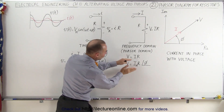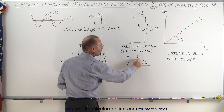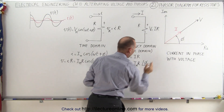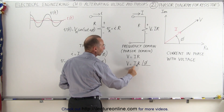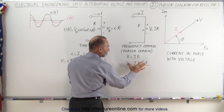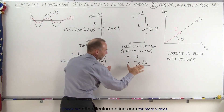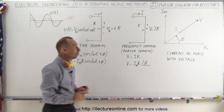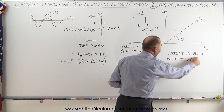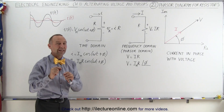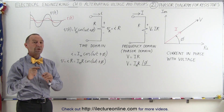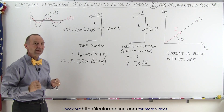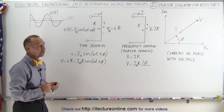Translating that into the frequency domain, it's simply the current times the resistance. If there's a phase angle other than zero — as you can see at time equals zero there's already a phase angle — then it's the maximum current times the resistance, giving you the maximum voltage times the phase angle. This equation is exactly represented in the phasor domain by that expression. The current is in phase with the voltage for a resistor; the current and voltage reach a maximum, minimum, and zero at the exact same moment in time. That's how we deal with phasor diagrams for resistors.